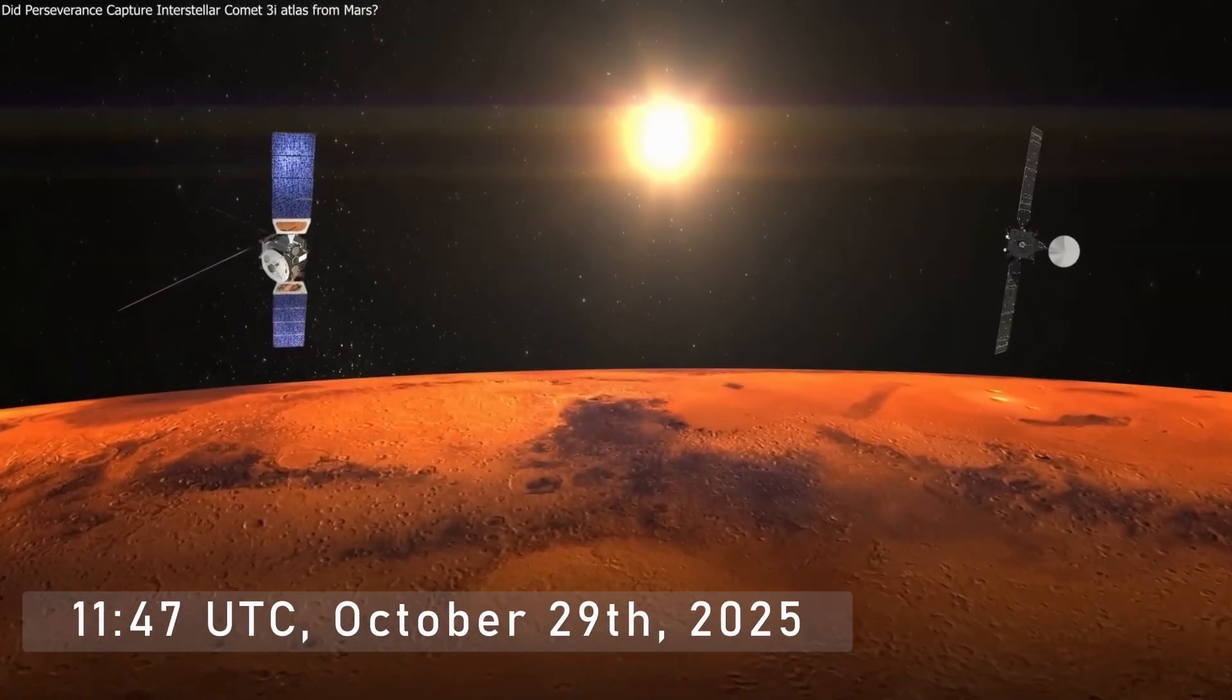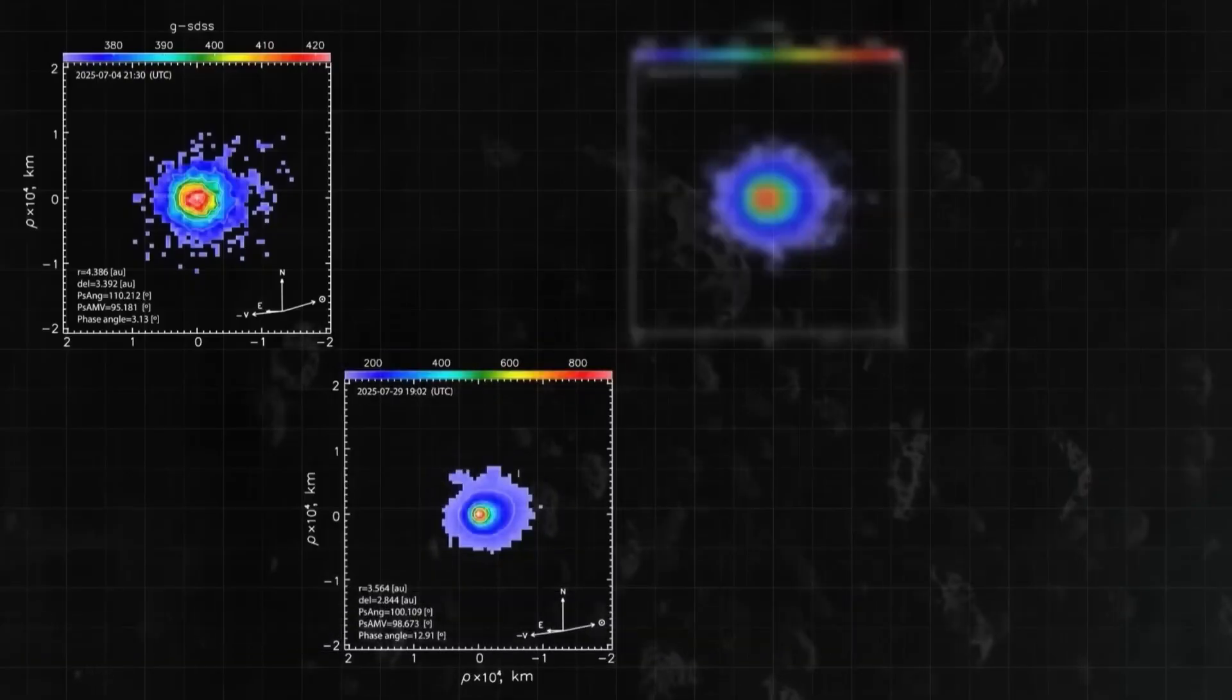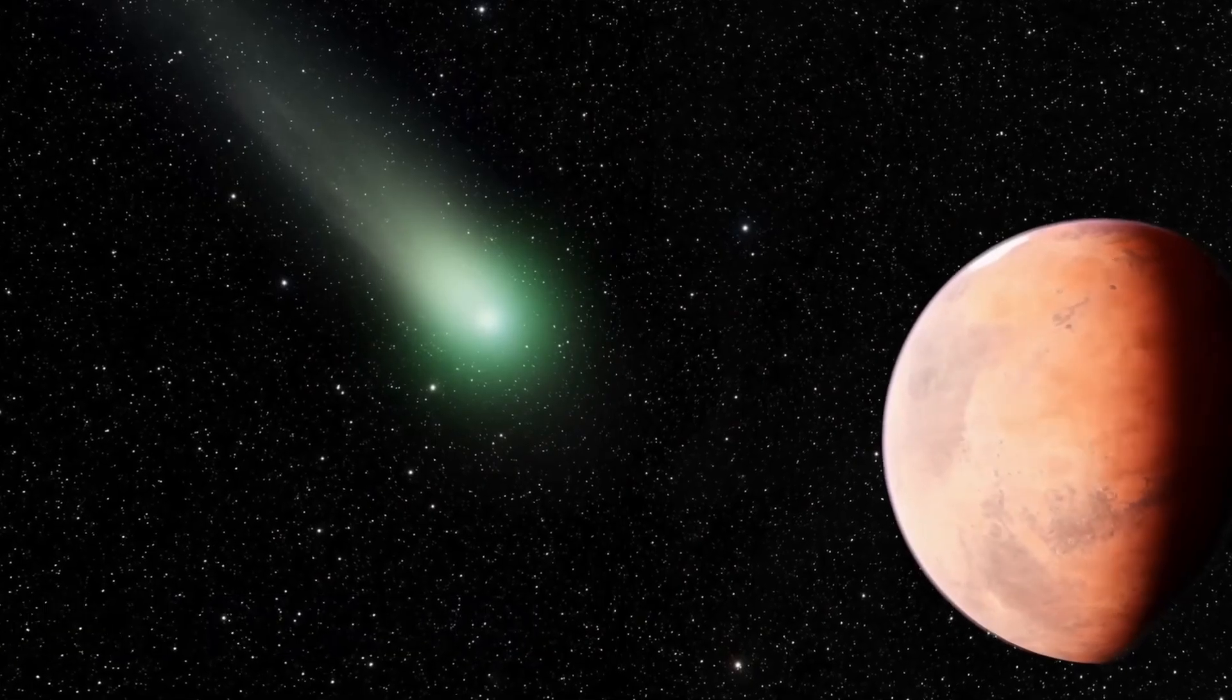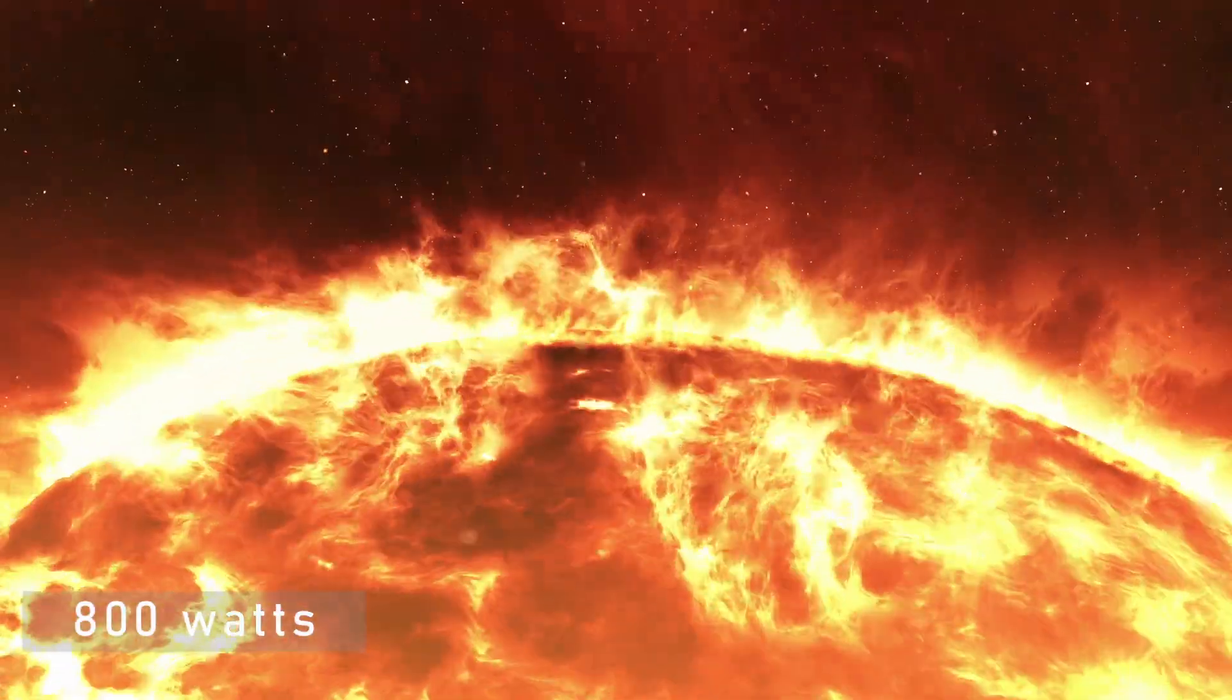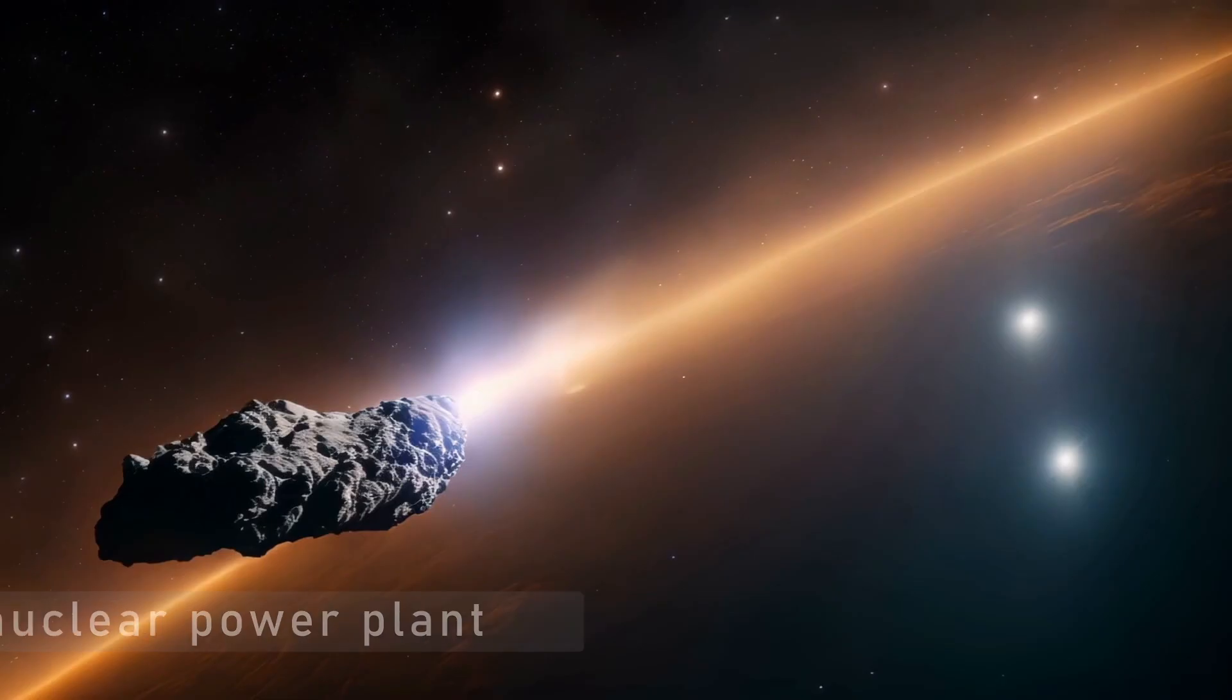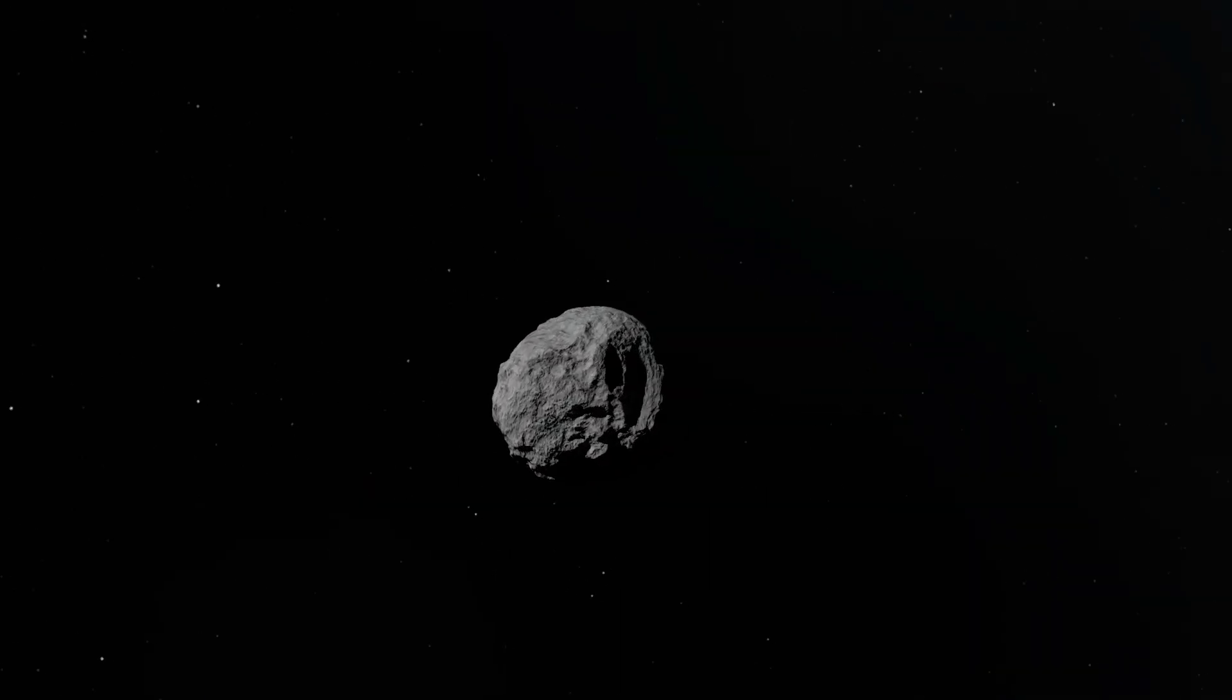At 1147 UTC, October 29th, 2025, 3i Atlas passed 126 million miles from the Sun, between Earth and Mars, while absorbing nearly 800 watts of solar energy per square foot. That's the equivalent of 30 nuclear power plants aimed squarely at a city-block-sized chunk of rock and ice. And yet, it survived.